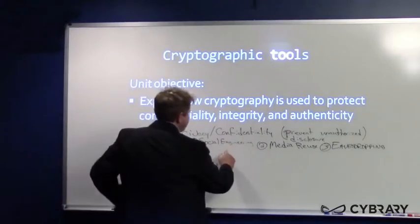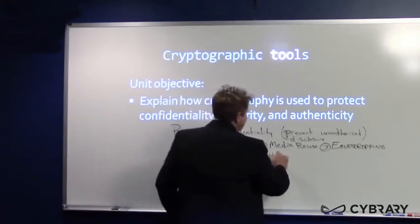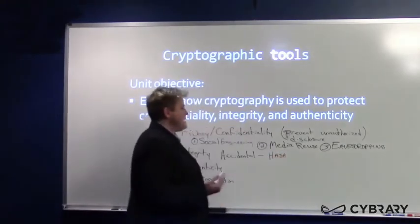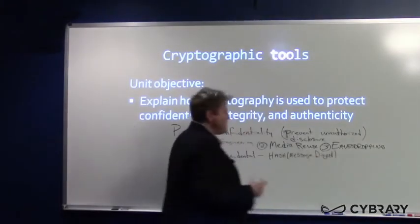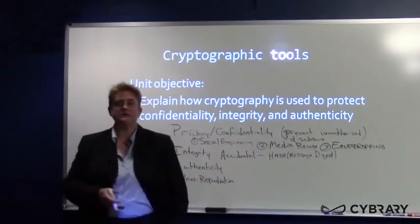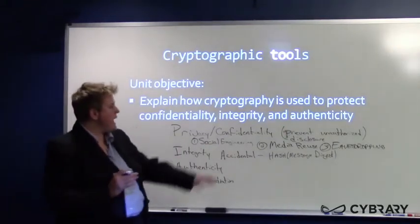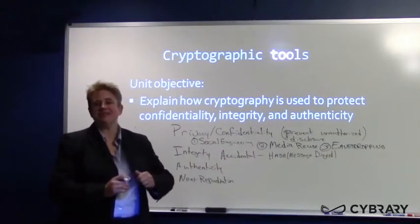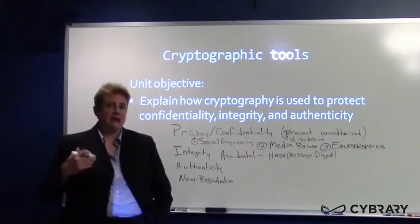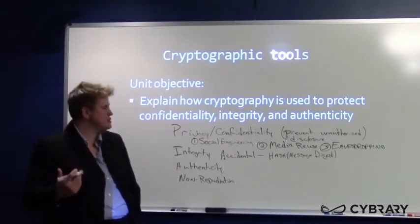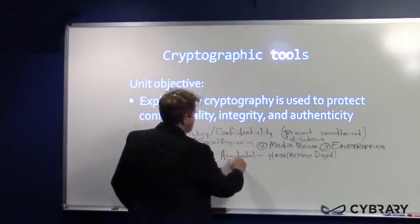Let's start with accidental modification. What we use to detect accidental modification is a hash, also called a message digest — the terms are used interchangeably. Hashes and message digests are there to detect accidental modification, such as corruption on the line. If we want to detect malicious, intentional modification, there are two elements that can provide that protection.